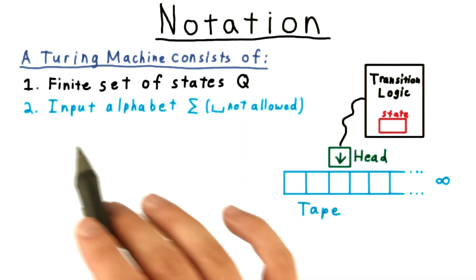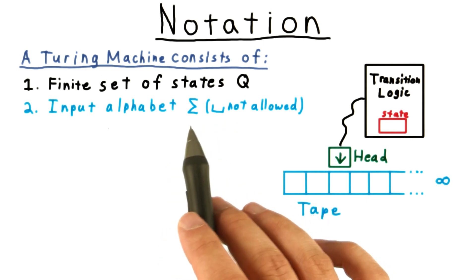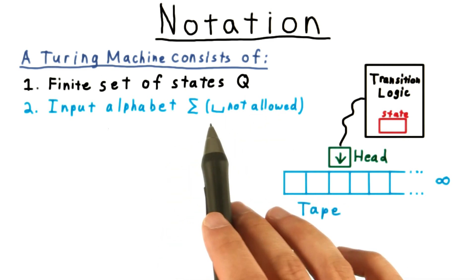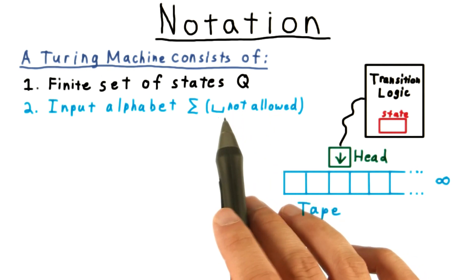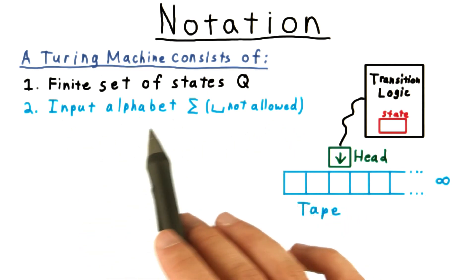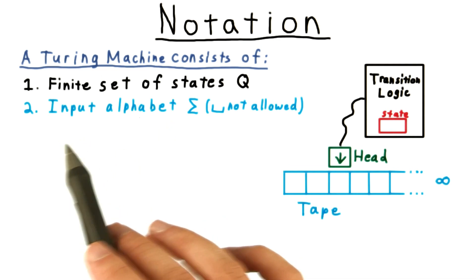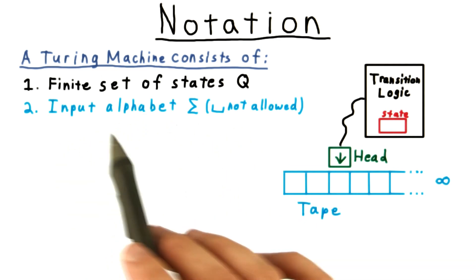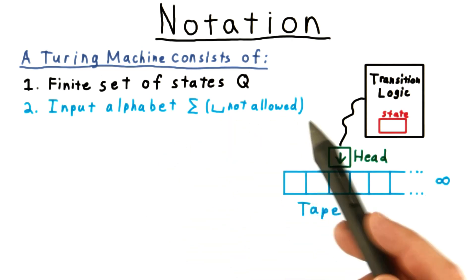Next, we need to specify an input alphabet of allowed symbols. This must not include the blank symbol, which we will notate with this square cut most of the time. For some of the quizzes where we need you to be able to type the character, we will use B. We can't allow the input alphabet to include the blank symbol, or we wouldn't be able to tell where the input string ended. The whole rest of the tape, where the input string is not written, by the way, has blanks on it.